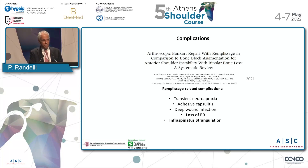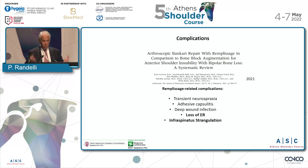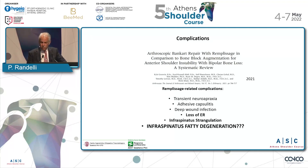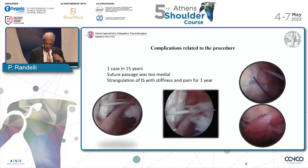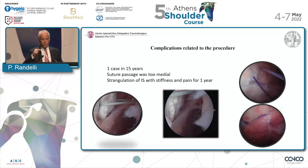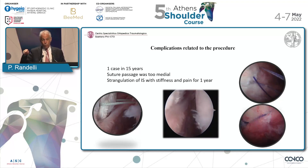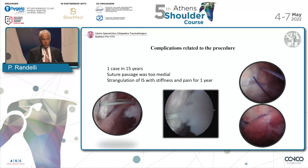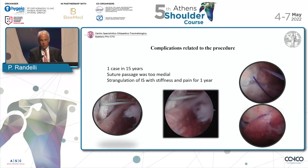What about the complications? We need to clarify this point because there are some complications and we need to be aware of them. Remplissage-related complications include transient neuropraxia, adhesive capsulitis, and deep wound infection — fortunately I haven't had those, but they will come if you operate a lot. I have had loss of external rotation. Infraspinatus strangulation — I will show you this. This happens if you stay with the anchor too medial and then with suture passage too medial, causing strangulation of the infraspinatus tendon with the suture. The patient was very symptomatic. Always listen to the patient — he came to me complaining of a stiff shoulder.